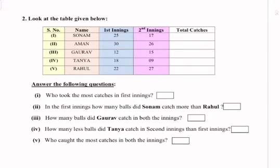Question number 2: look at the table given below. The names are Sonam, Aman, Gaurav, Tanya, Rahul. In the first inning their catches are: Sonam 25, Aman 30, Gaurav 12, Tanya 18, Rahul 22. In the second inning: Sonam 17, Aman 26, Gaurav 12, Tanya 9, Rahul 27.